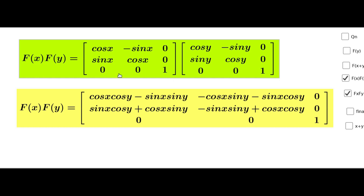Third row, first column: 0·cos y + 0·sin y + 1·0 = 0. Third row, second column: 0·(-sin y) + 0·cos y + 1·0 = 0. Third row, third column: 0·0 + 0·0 + 1·1 = 1.